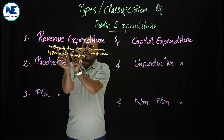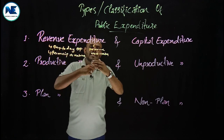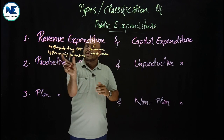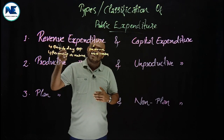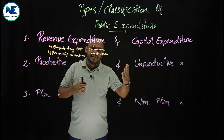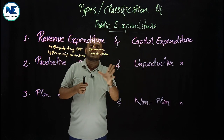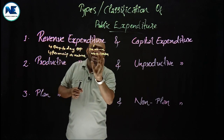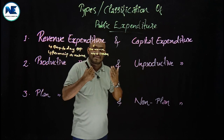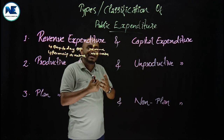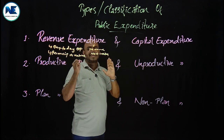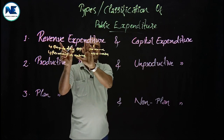So to summarize, revenue expenditure is the day-to-day expenditure of the government. As part of revenue expenditure, we never expect asset creation. If the government constructs a building, that is not revenue expenditure — revenue expenditure is over at that point. Revenue expenditure does not create assets.